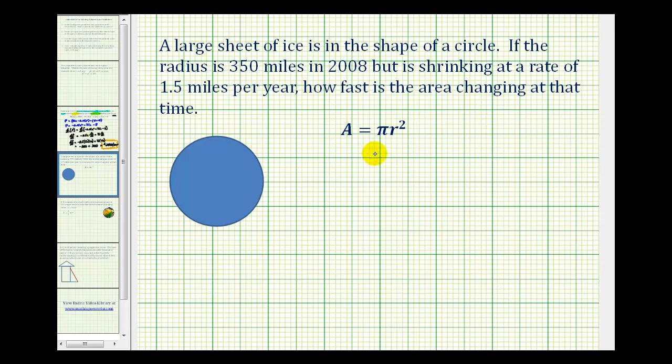So here's the area formula for a circle, which is good for determining the area of a circle at a specific value of r, or even determining r at a specific area. But we want to determine the rate of change of the area when the radius is 350 miles and the radius is shrinking at 1.5 miles per year.